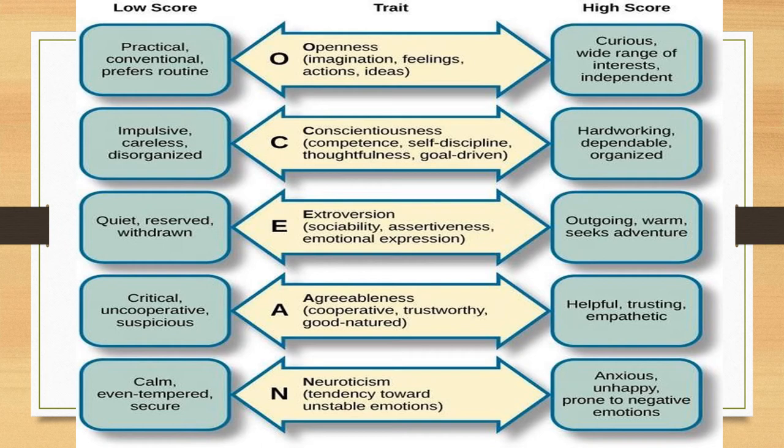Extroversion versus introversion: are you quiet, withdrawn, reserved, or are you outgoing, warm, and seek adventure? We just talked about this one. Agreeableness ranges from critical, uncooperative, and suspicious versus helpful, trusting, and empathetic — how much do you trust the world? And then neuroticism: calm versus anxiety, a tendency towards unstable emotions. You're either calm, even-tempered, and secure, or anxious, unhappy, and prone to negative emotions.